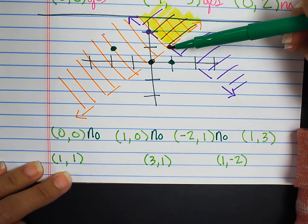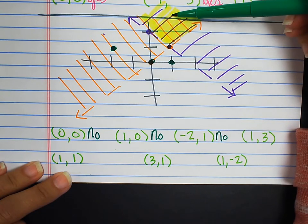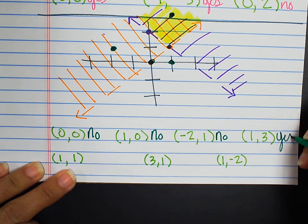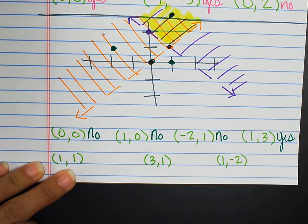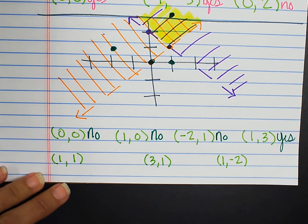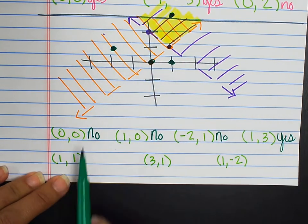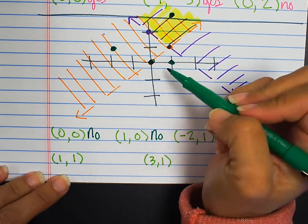The point one, three — that is here. That is definitely in the double shaded region, therefore it is a solution to this system of inequalities.